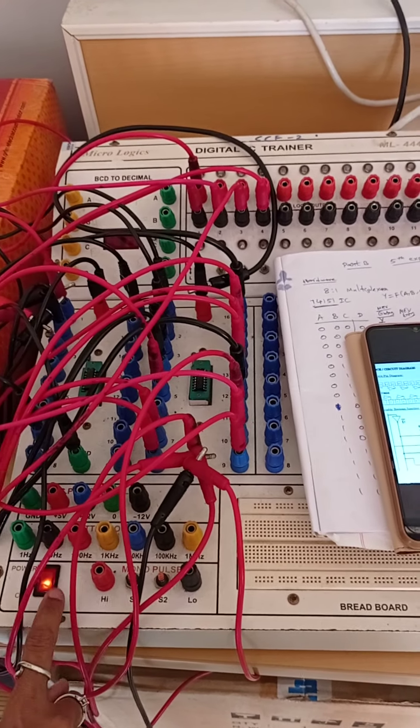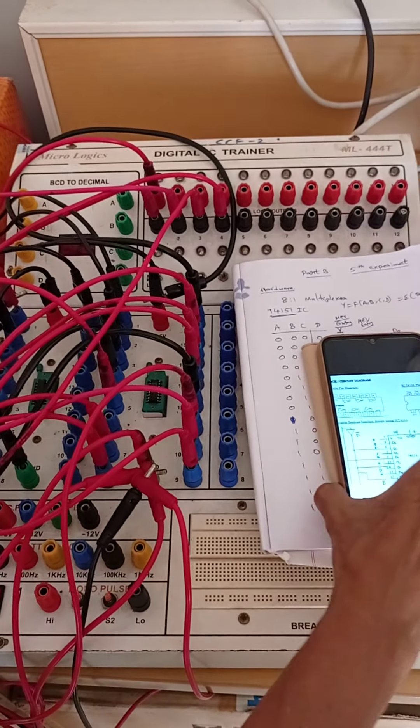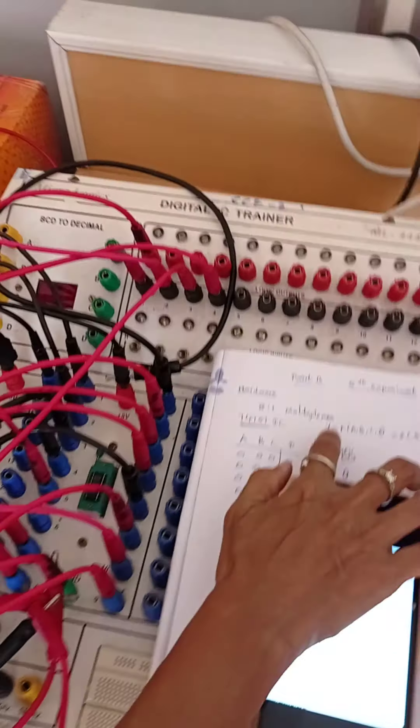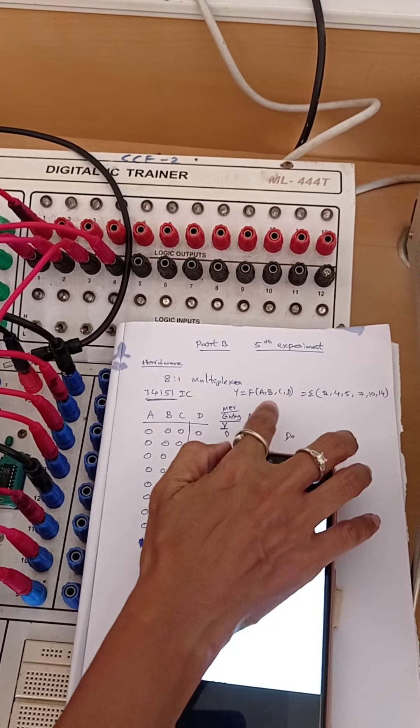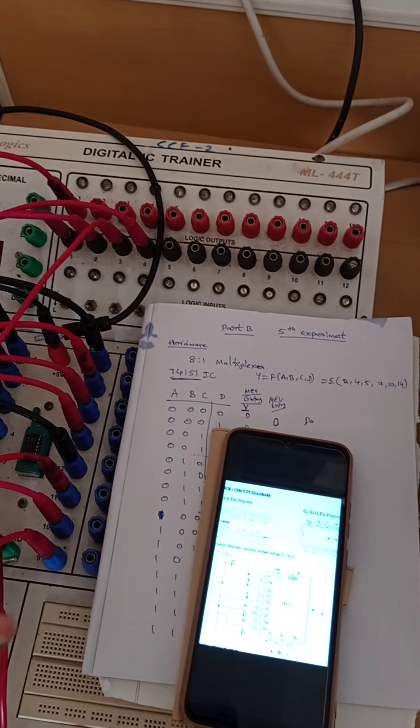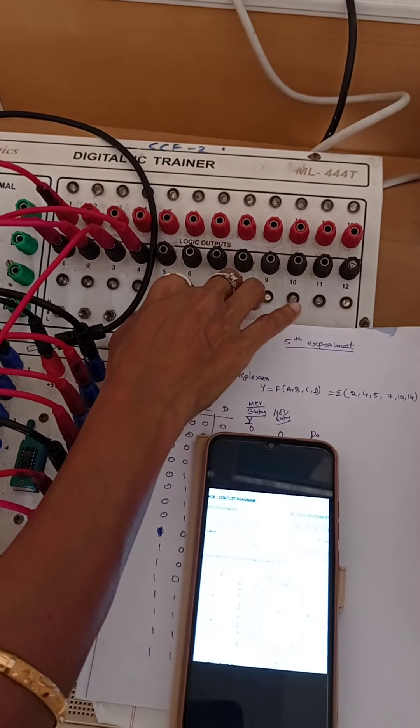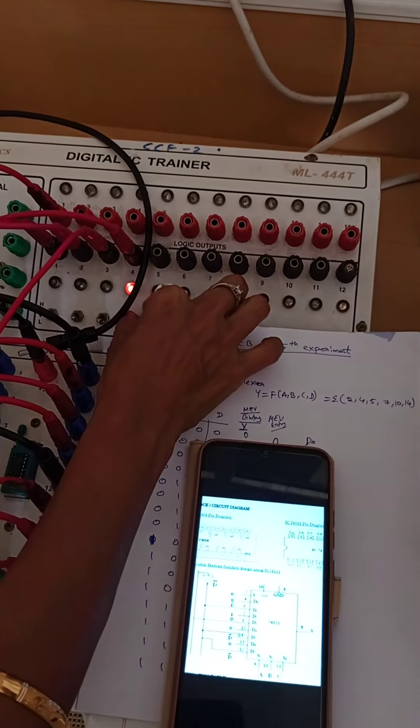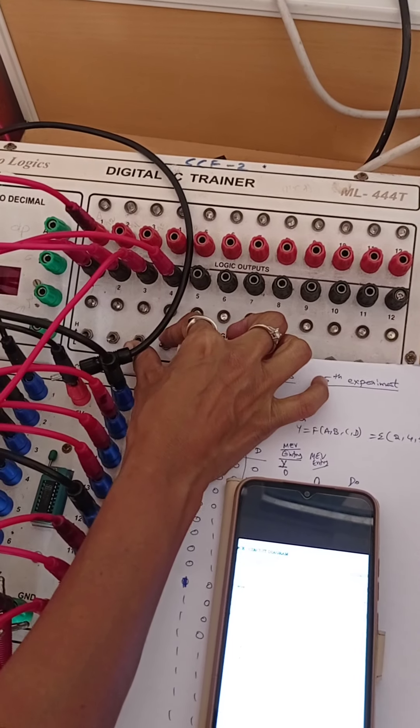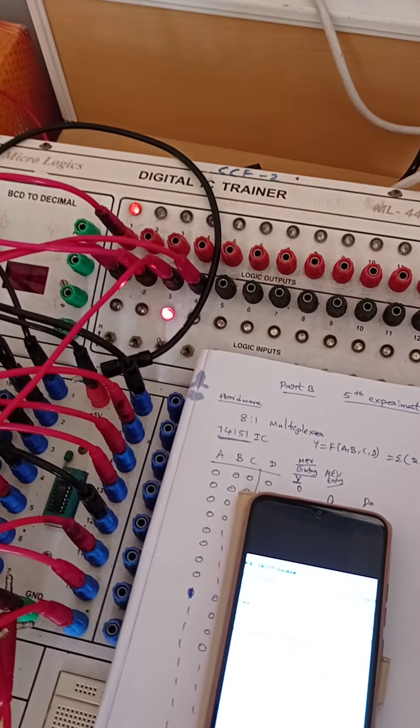Switch on the trainer key. Now check the values, output Y. See here for 2, 4, 5, 7, 10, 14 we should get output 1, and for remaining all we need to get low 0. So I am checking, for this is 0, 1. Now 2, output should be high.